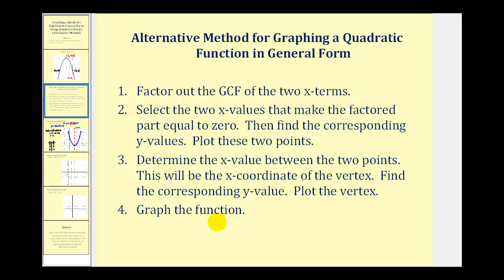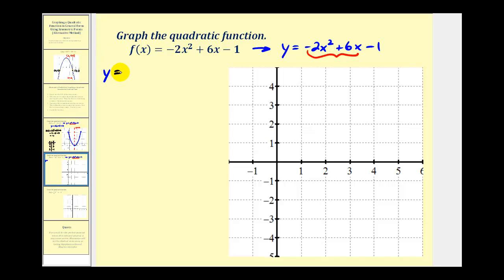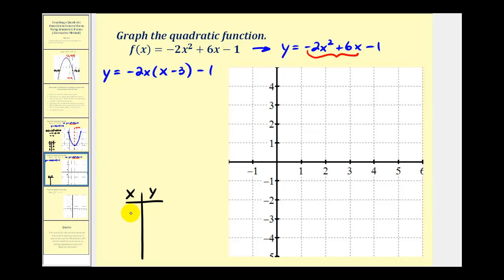Let's take a look at two more examples. Let's start by replacing f(x) with y, giving us y = -2x² + 6x - 1. We'll factor out the greatest common factor of the two x terms, which is -2x. So we'll have y = -2x(x - 3) - 1. Now we'll select the values that make this product equal to zero. When x = 0, this factor is zero, and when x = 3, this factor is zero.